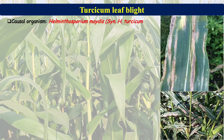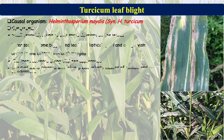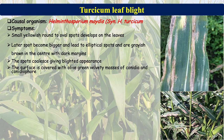The first disease is Turcicum Leaf Blight, caused by Helminthosporium maydis, synonymous with Helminthosporium turcicum. Initially, the organism produces small yellowish round to oval spots on the leaves. At later stages, spots become bigger and elliptical, grayish-brown in the center with a dark margin. Two to three spots coalesce, giving a blighted appearance. The surface of the spots is covered with olive-green velvety masses of conidia and conidiophores.